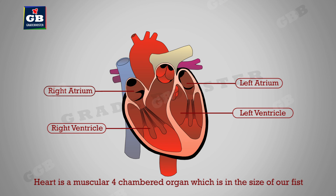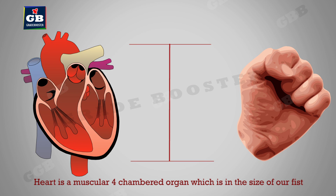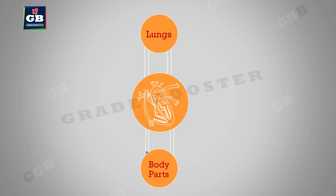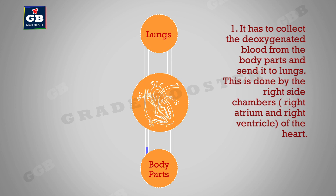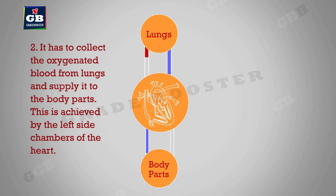The heart is a muscular four-chambered organ about the size of our fist. It has two different jobs. First, it has to collect the deoxygenated blood from the body parts and send it to the lungs. This is done by the right side chambers — the right atrium and right ventricle.